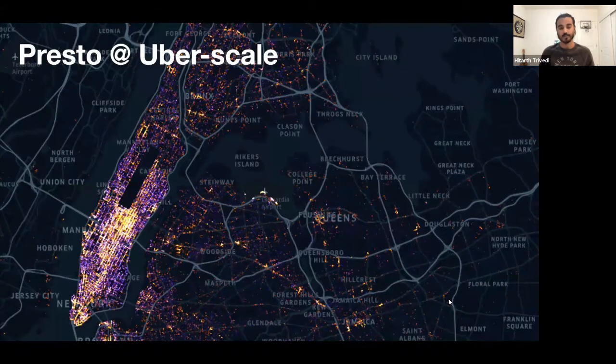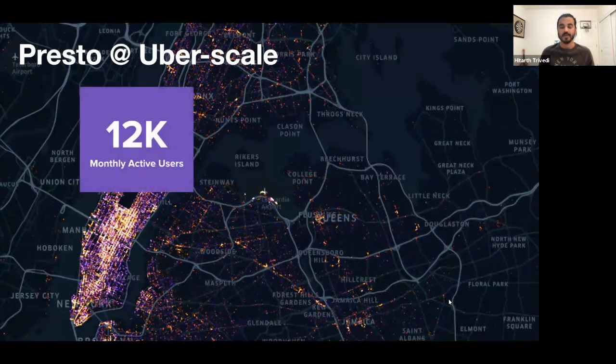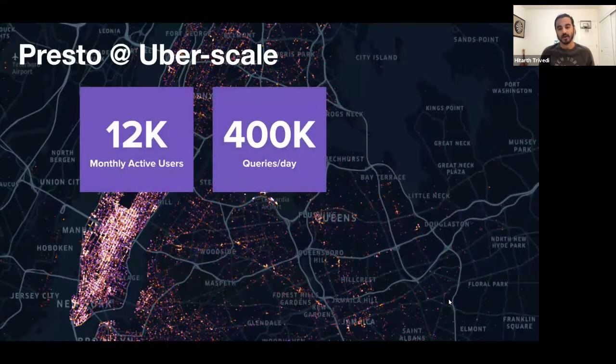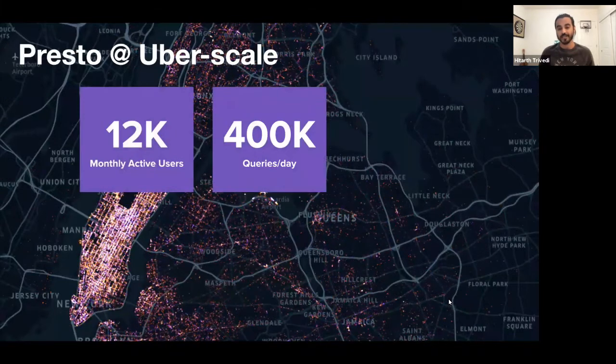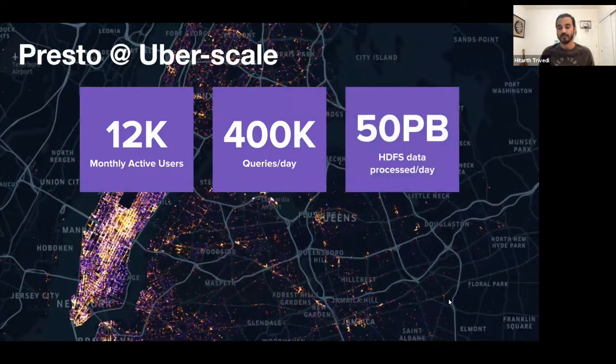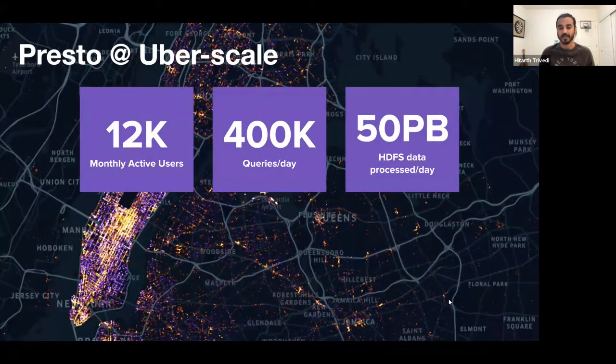Now let's talk about Presto and Uber scale. We have around 12,000 monthly active users. These users run around 400K queries per day. These queries roughly process around 50 petabytes of HDFS data per day.